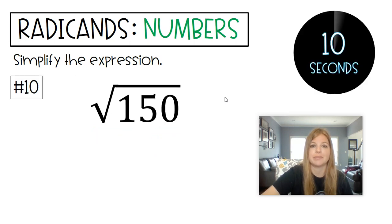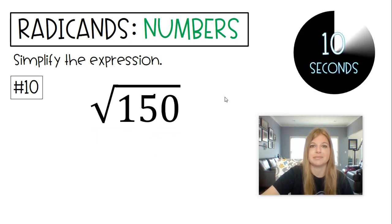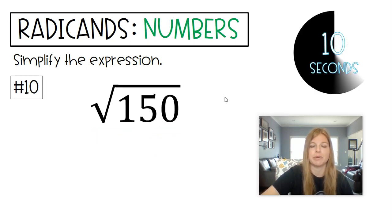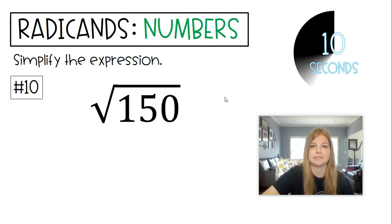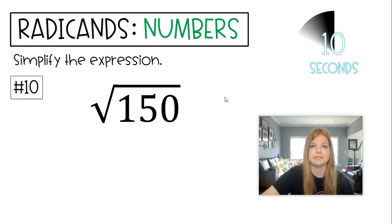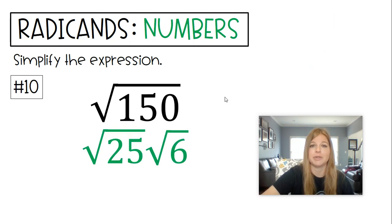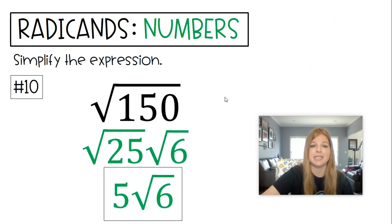Last one — Radical 150. The biggest perfect square that goes into 150 is 25. 25 times 6, which becomes 5 Radical 6.